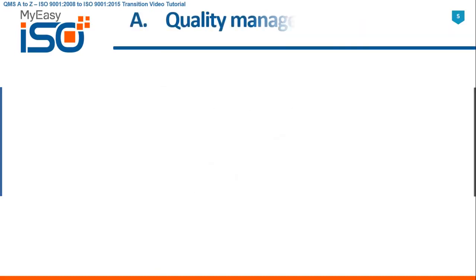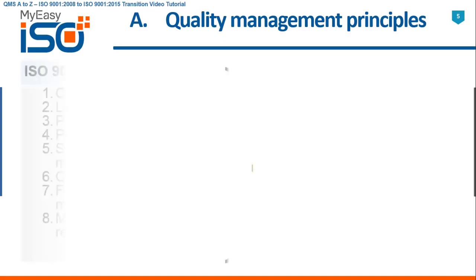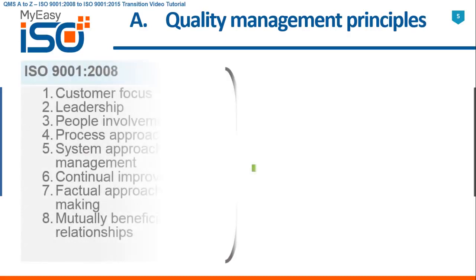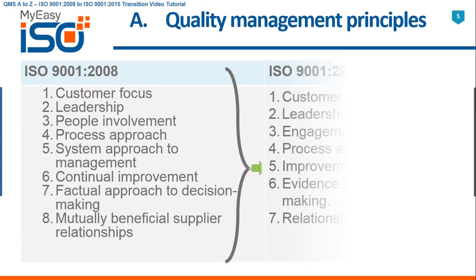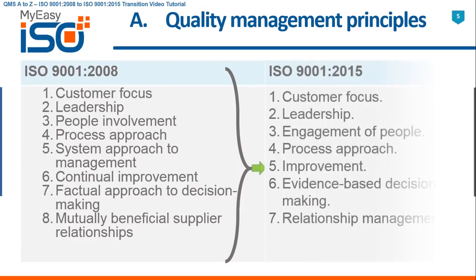A — Quality Management Principles. In ISO 9001 2008 we had eight management system principles. These are replaced with seven quality management principles in ISO 9001 2015.